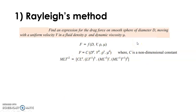We now write the dimensions for each variable. F has dimensions of M^1 L^1 T^-2. The constant C carries no dimensions, i.e., M^0 L^0 T^0. Diameter has dimensions of L^a. Velocity has dimensions of (L^1 T^-1)^b. Density has dimensions of (M^1 L^-3)^c. Dynamic viscosity has dimensions of (M L^-1 T^-1)^d.